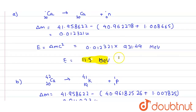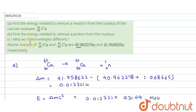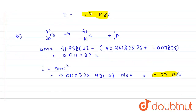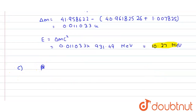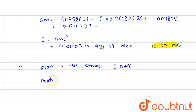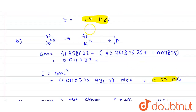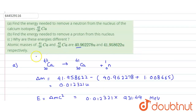Part C asks why the energies are different. The proton is positively charged, so it experiences both nuclear attraction and Coulomb repulsion inside the nucleus. The neutron is neutral, so it feels no Coulomb repulsive force — only the attractive nuclear forces act on it. Due to this repulsion, the binding energy of the proton is reduced, which is why the energy required to remove the proton (10.27 MeV) is less than that required to remove the neutron (11.5 MeV).